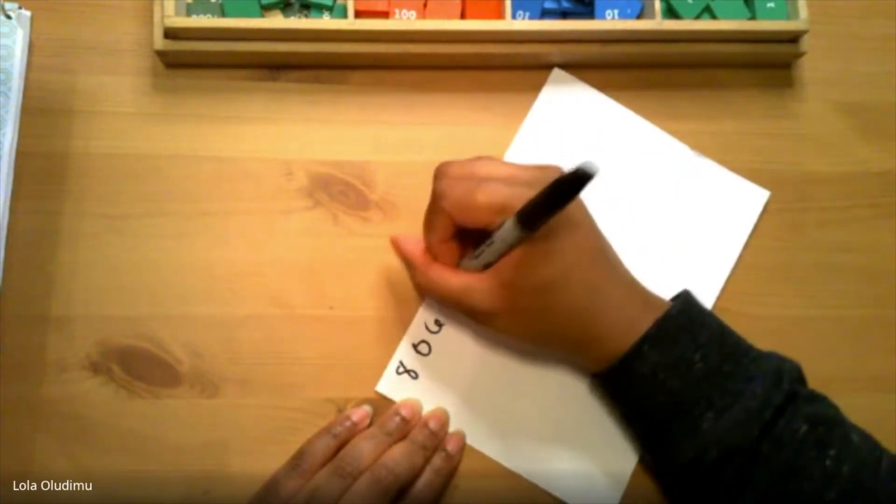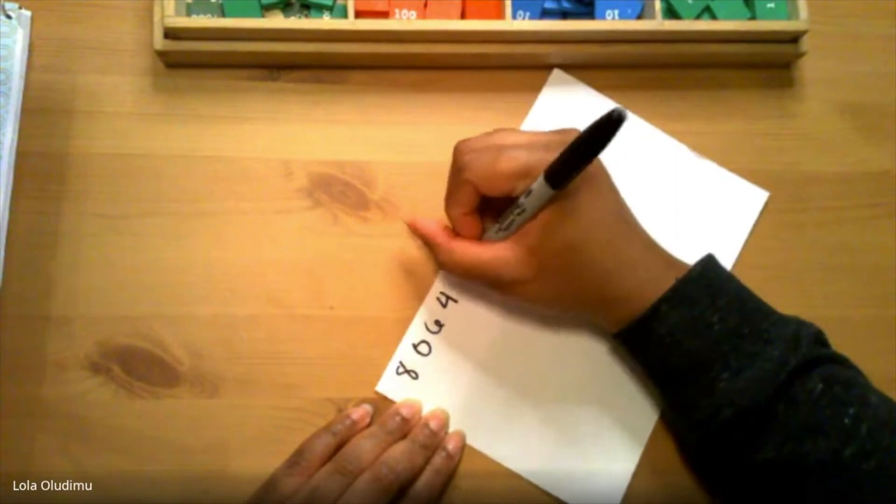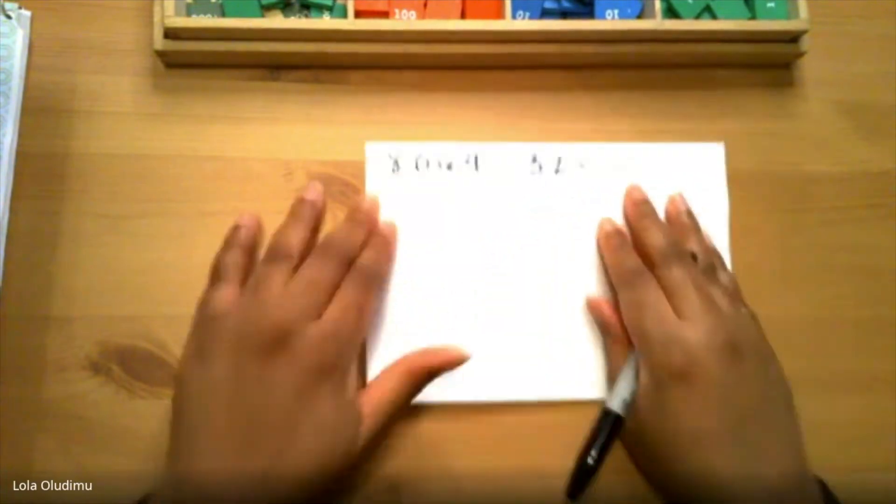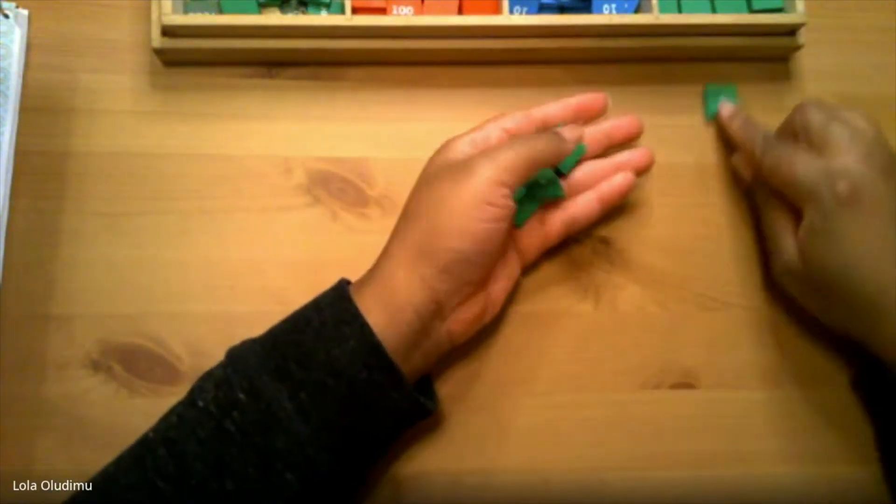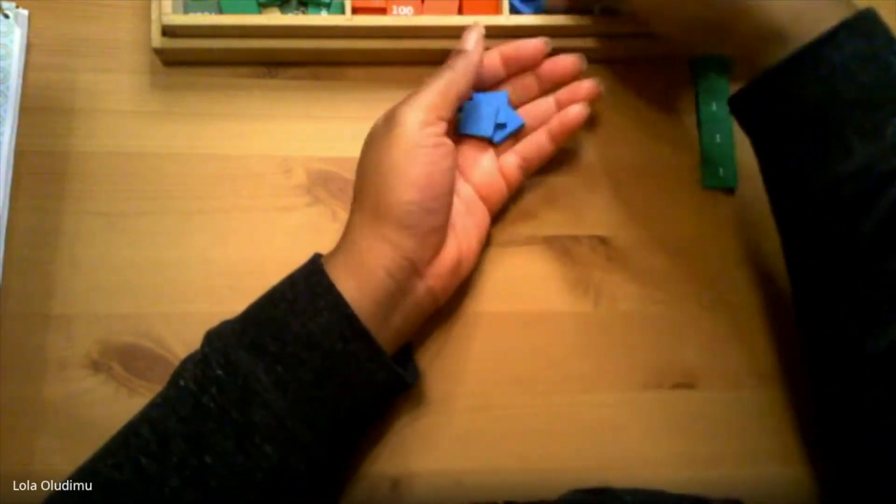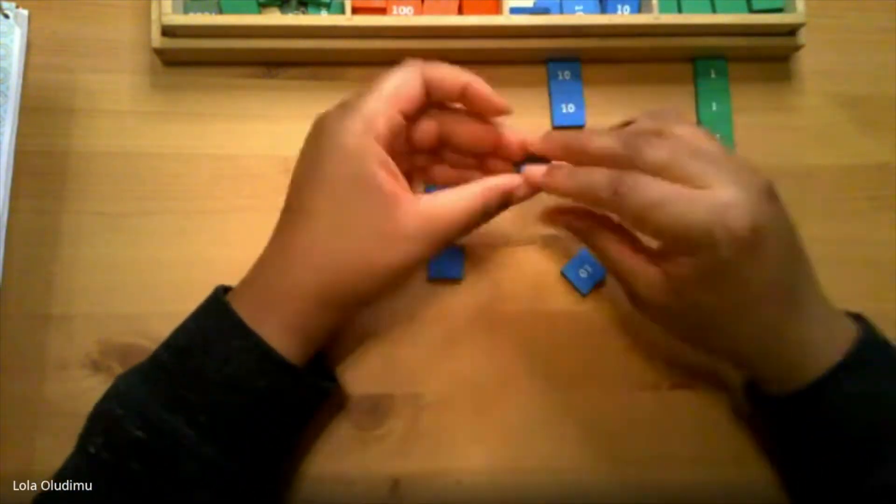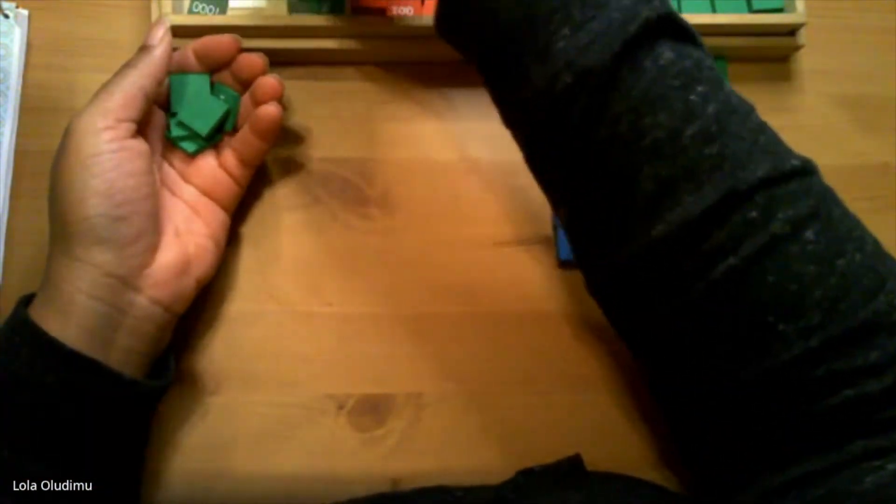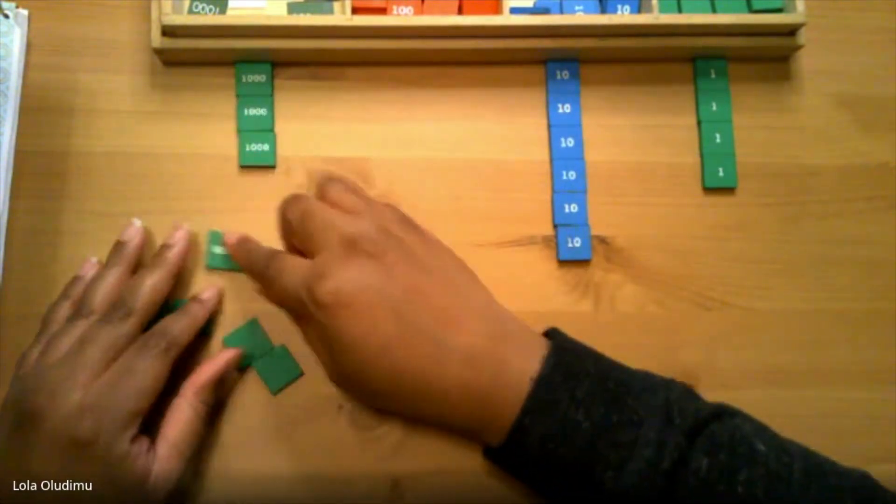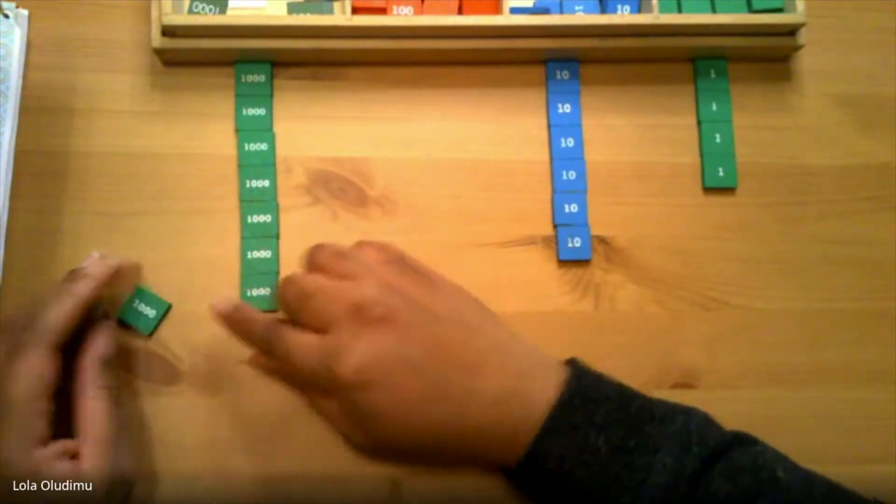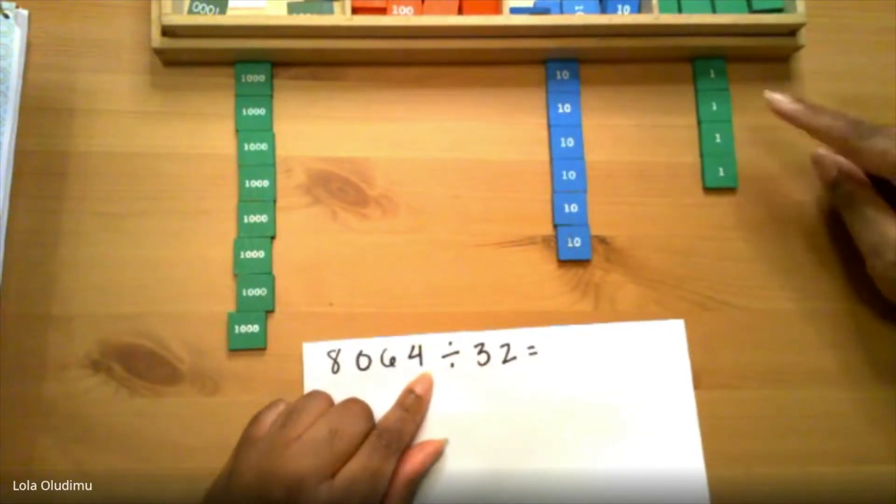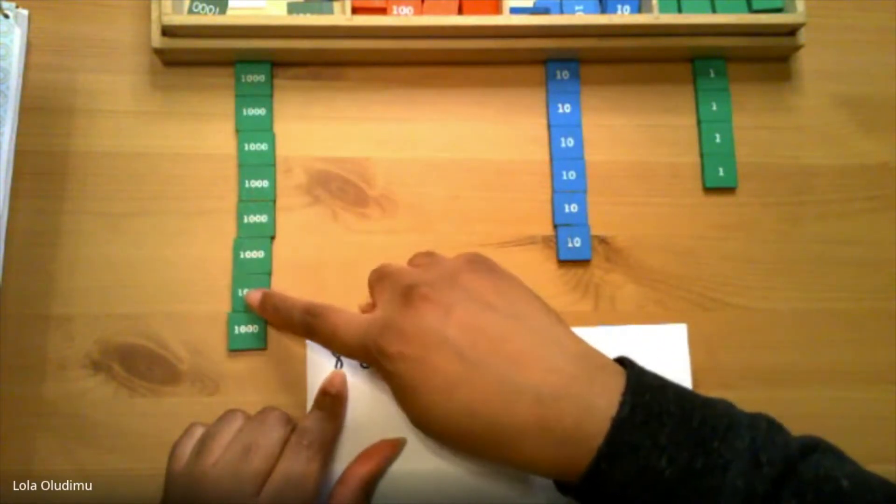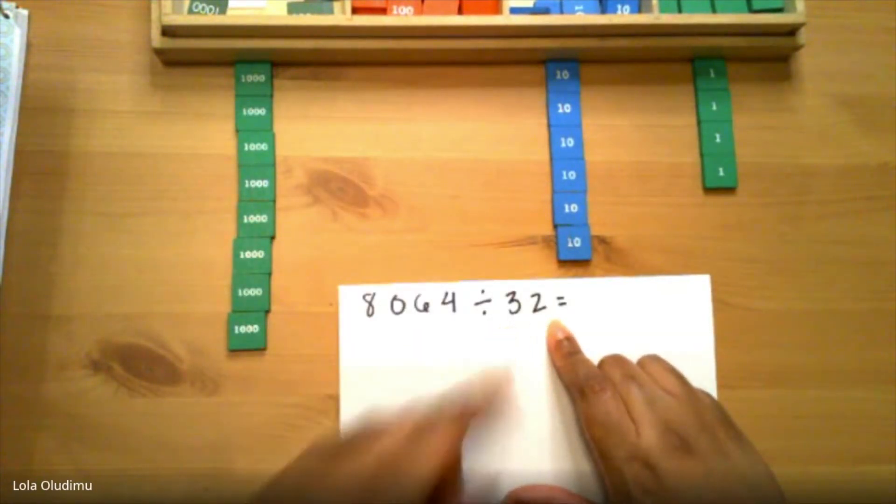8,064 divided by 32. Let's build this number first. We are dividing by 32.